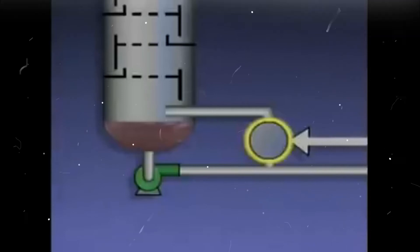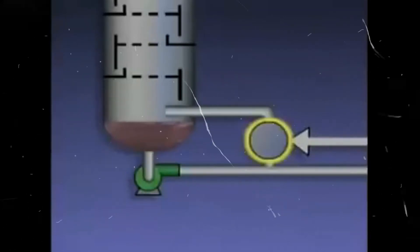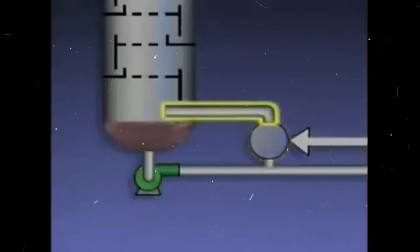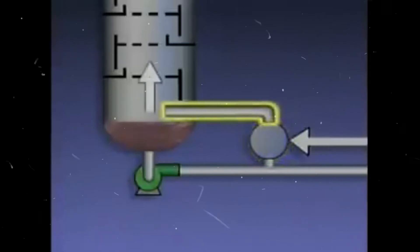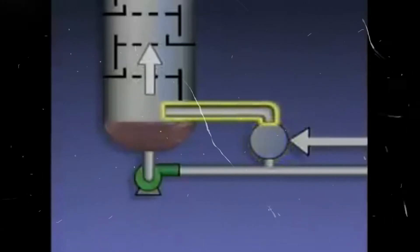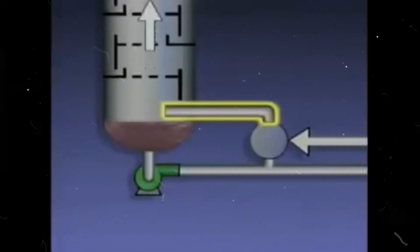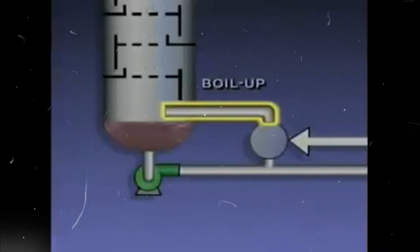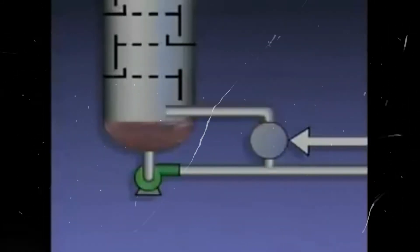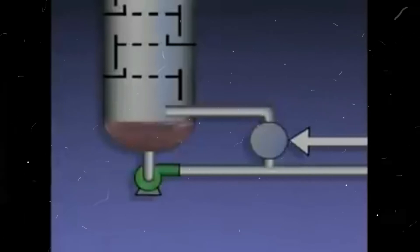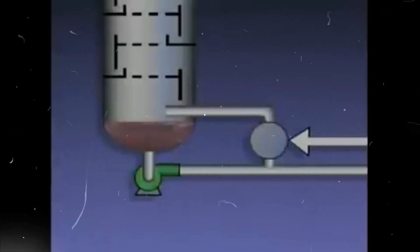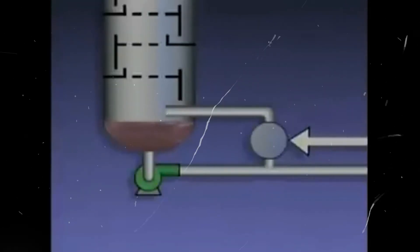Vapors from the reboiler, or in some cases a mixture of vapors and liquid, re-enter the tower. The vapors then rise up in the tower. These vapors and the heat they contain are often referred to as boil-up. The hot boil-up provides heat that's needed for the distillation process to take place in the tower.